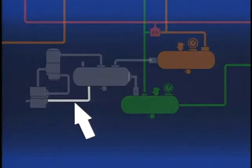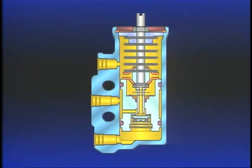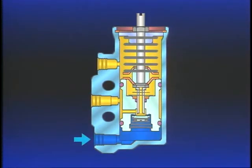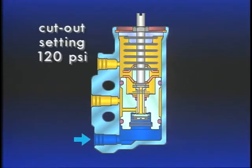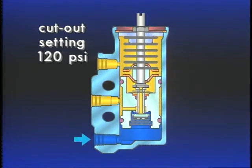An airline connects the governor to the supply reservoir. Reservoir air enters the governor at its reservoir port. As air from the compressor builds reservoir pressure, the governor's piston and valve move together against the resistance of the pressure setting spring. When reservoir pressure reaches the cutout setting of the governor, typically 120 PSI, the piston will have moved sufficiently to seal the exhaust and open the inlet.